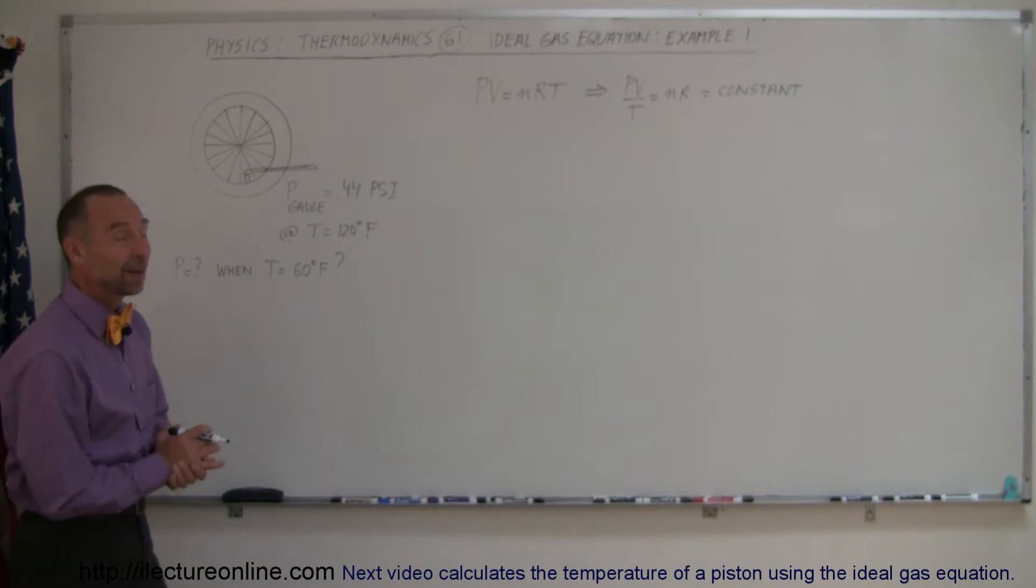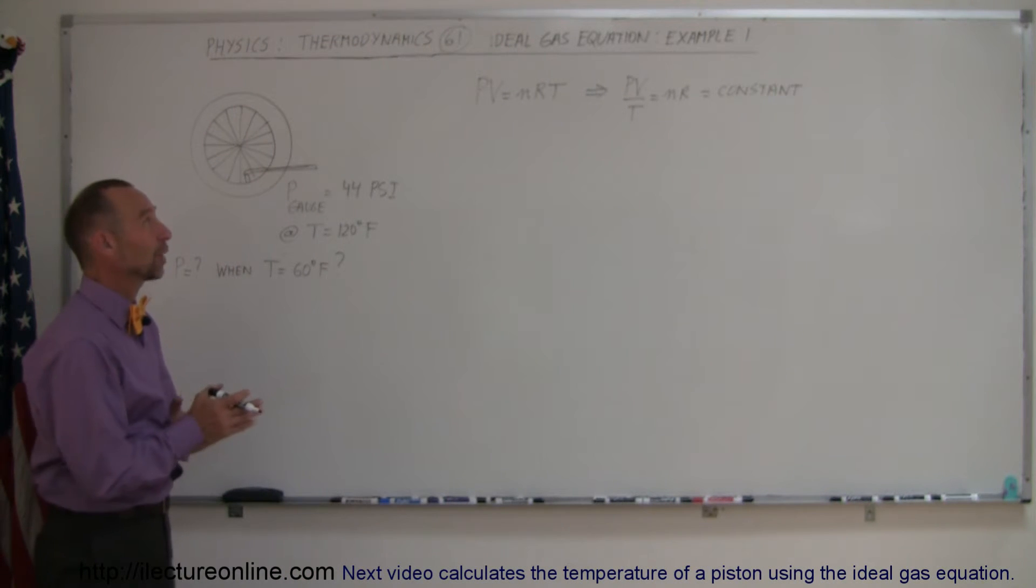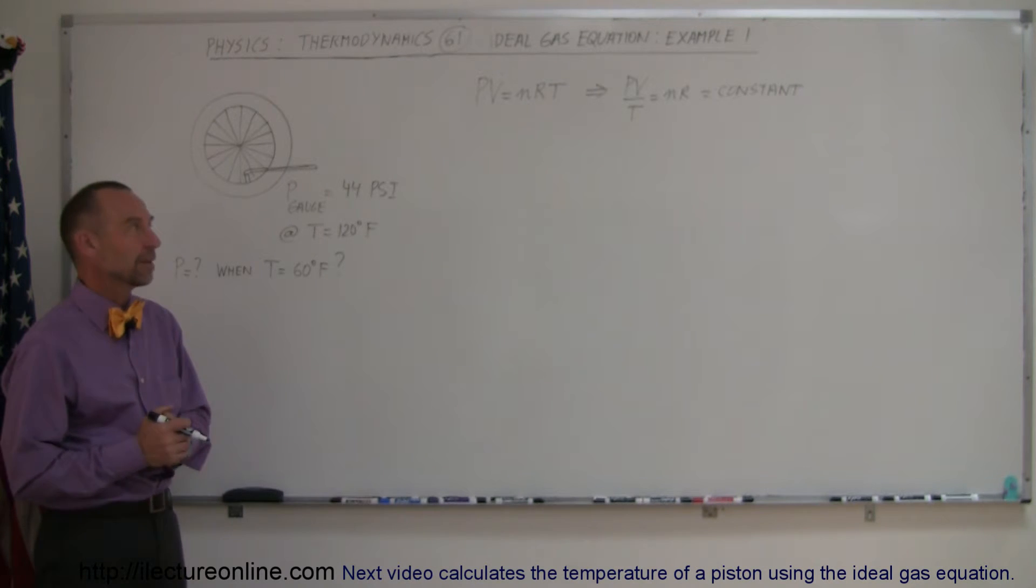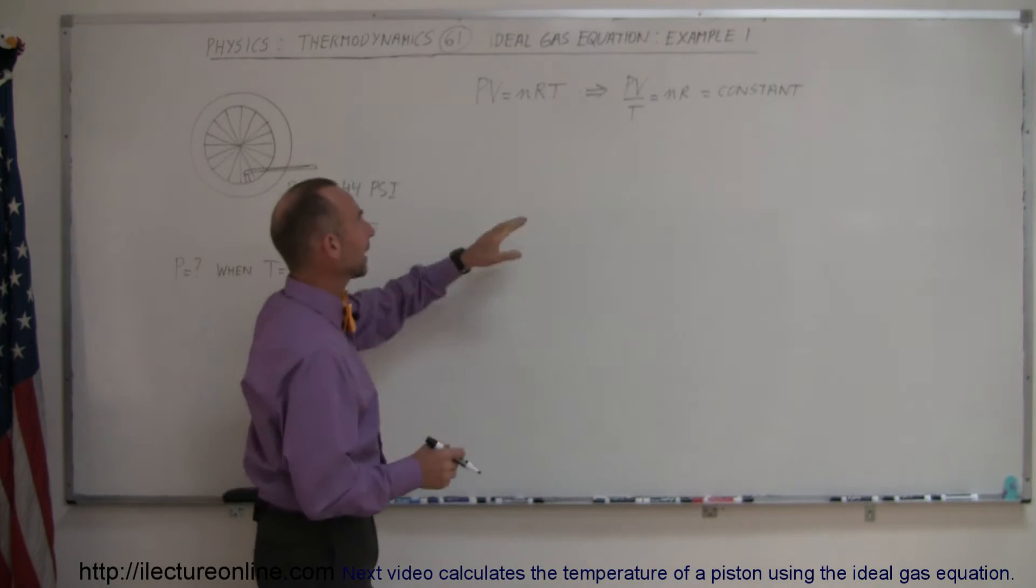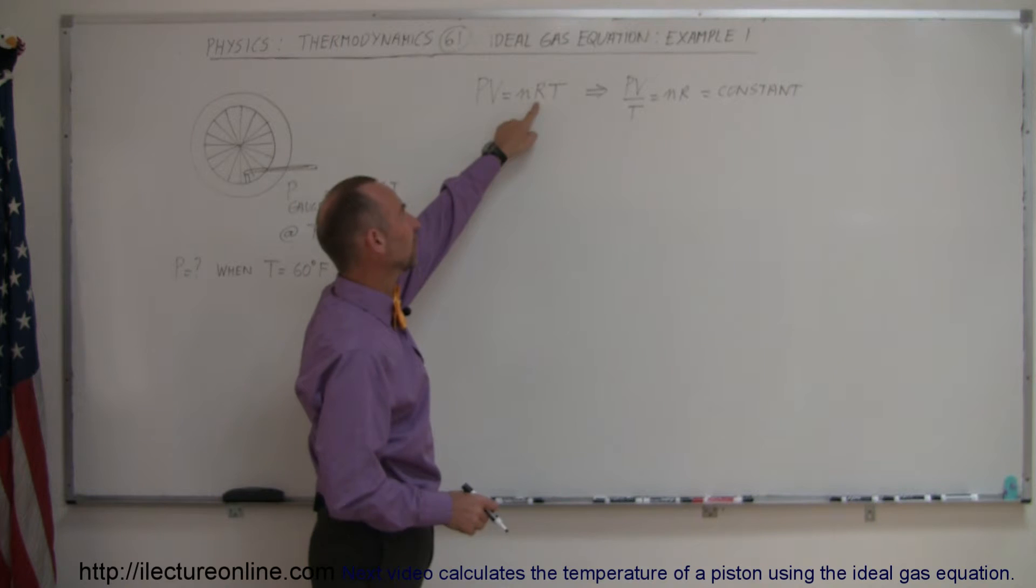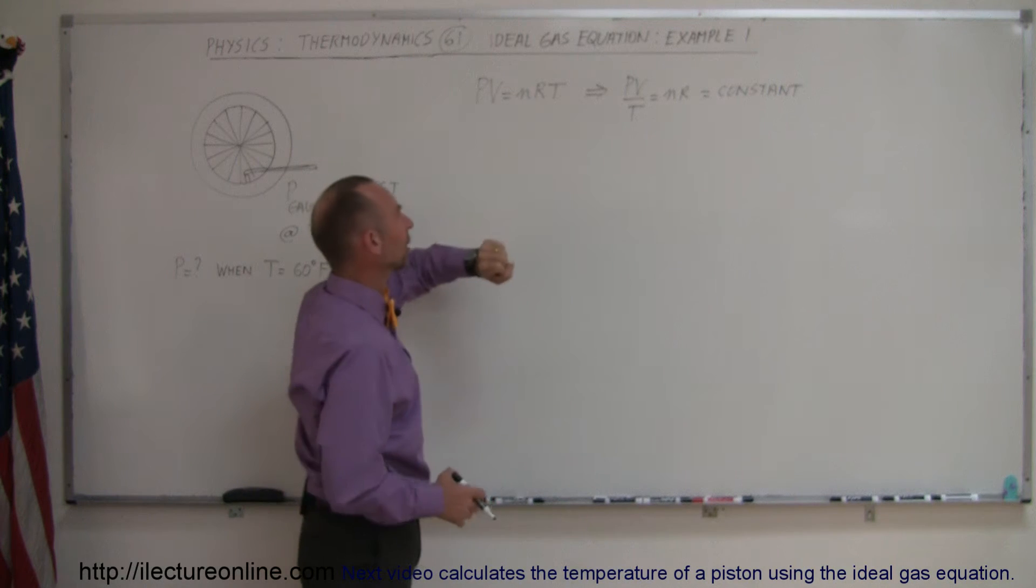Welcome to Electron Online and here's a good example of how to use our ideal gas equation PV equals nRT. We realize that N is the number of moles, R is the constant, the gas constant.